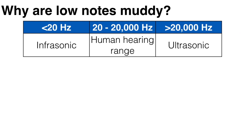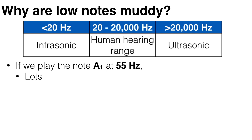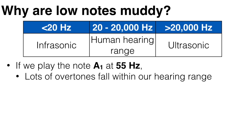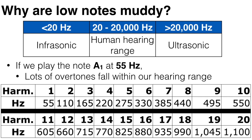Our hearing range is from about 20 hertz to 20,000 hertz. Anything below or above this range is inaudible to us. So if we play a really low note — say the note A at 55 hertz — then lots of overtones fall within our hearing range.